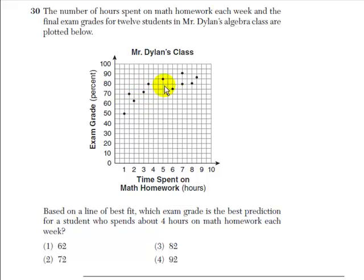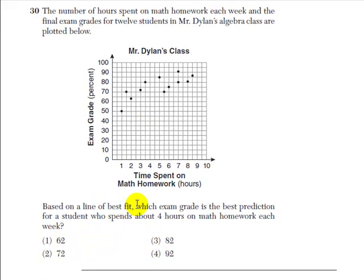If we find just a value that's somewhere in the ballpark, we should have a good idea. So they give us answer choices of 62, 72, 82, and 92 for four hours on math homework.